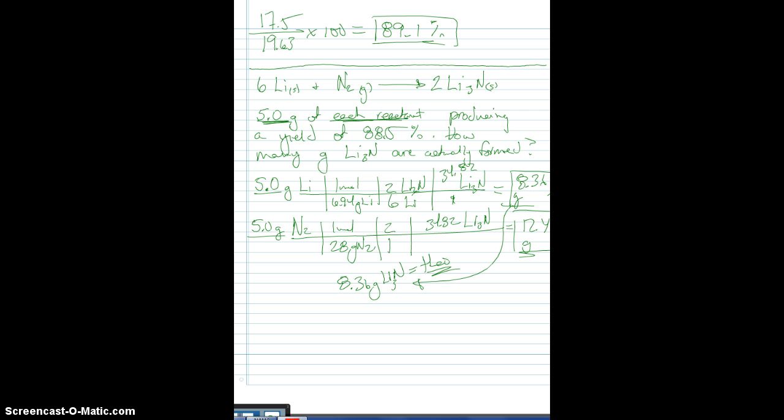Now, the question asked how many grams of lithium nitride are actually formed. So what we're going to do is we're going to use, once again, the percent yield formula, which is equal to actual divided by theoretical multiplied by 100, and I've got a lot of these values. In the problem, it gave me the percent yield as 88.5. So 88.5 percent is equal to actual, which is what I'm looking for, over my theoretical, which is 8.36 grams multiplied by 100.